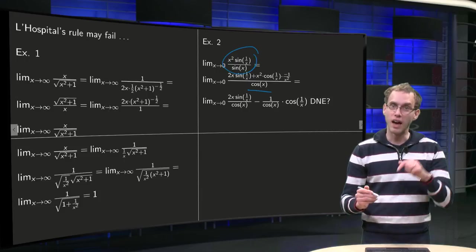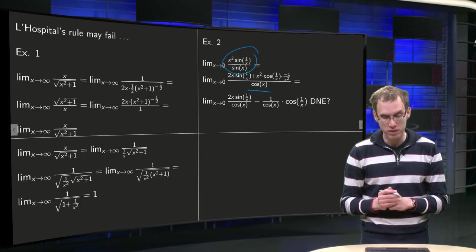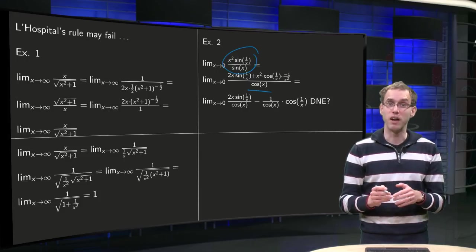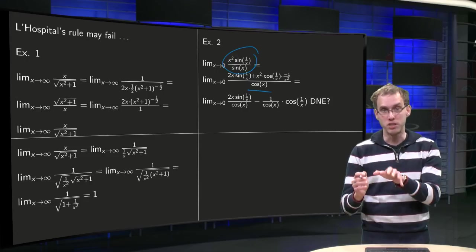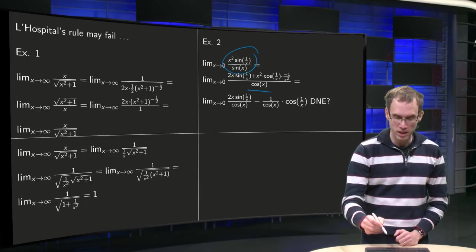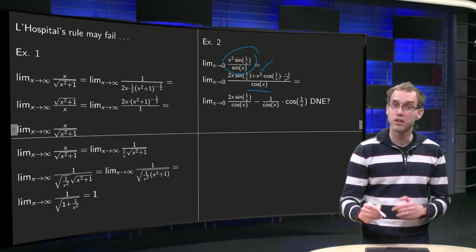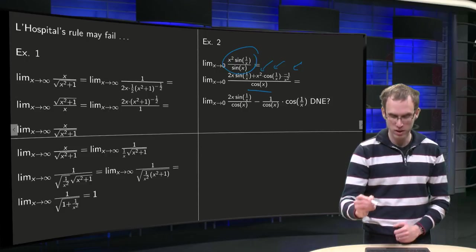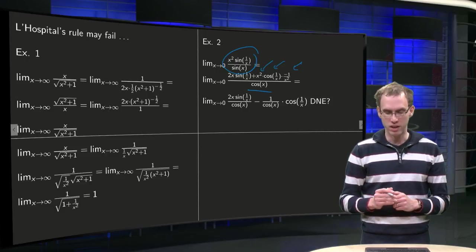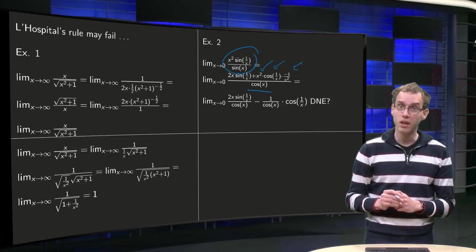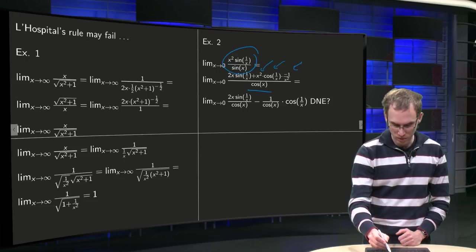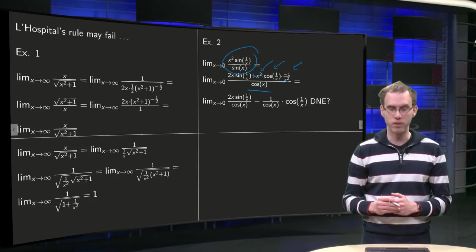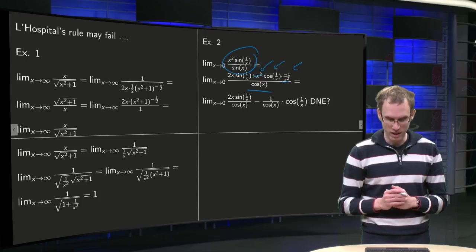Cosine of x in the denominator, that derivative is easy. And in the numerator we have to use the product rule: 2x times sin 1 over x plus x squared times the derivative of sin becomes cosine times the chain factor minus 1 over x squared. And then we simplify a bit, the x squared cancels.